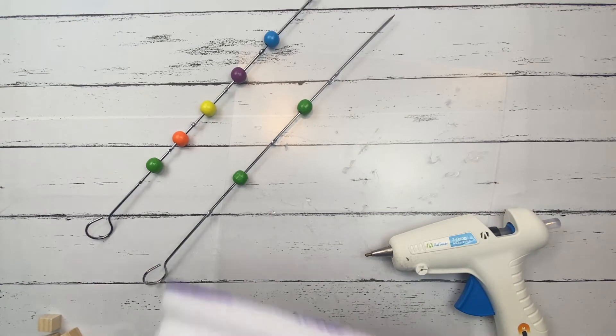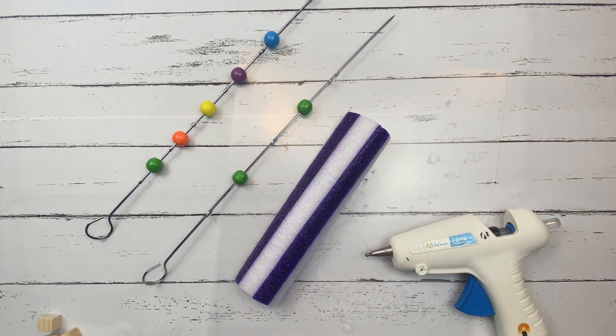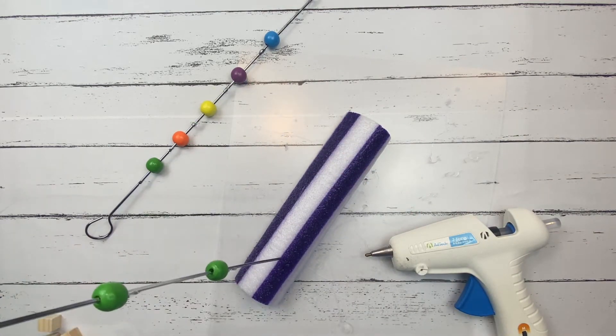Before I start painting I grab a pool noodle and I cut it in half so I can put the skewers in the pool noodle and I can paint all the way around my beads.